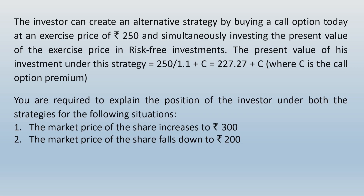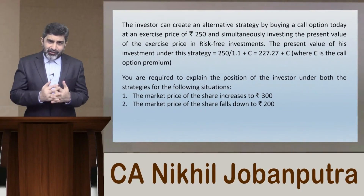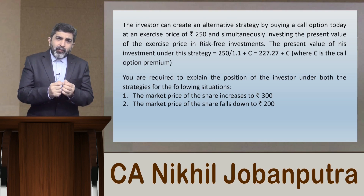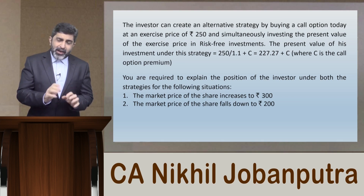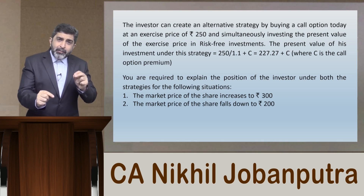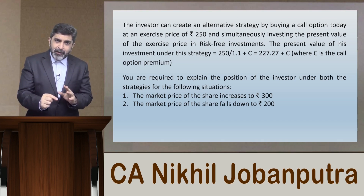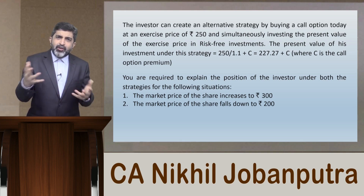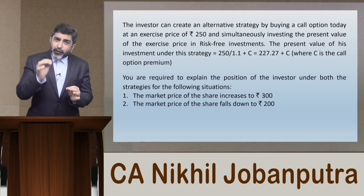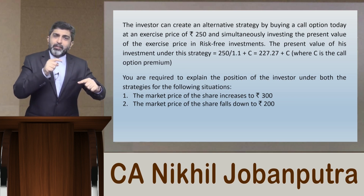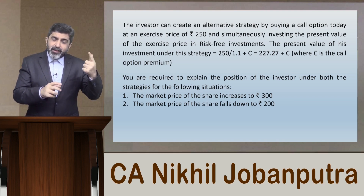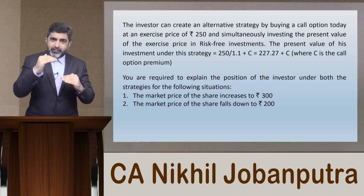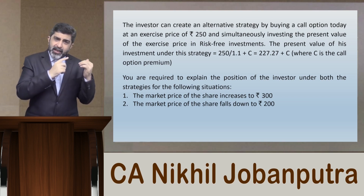Let me explain the impact of this alternative strategy. In the case of the protective put, when the share price falls down to 200, you still get 250 — you sell the share for 200 and by exercising the put option you get the differential of Rs 50. If the share price rises to 300, you sell the share in the open market for 300 and let your put option lapse, realizing 300. So your wealth will be either 250 or 300, and it will never drop below 250 under that earlier strategy.